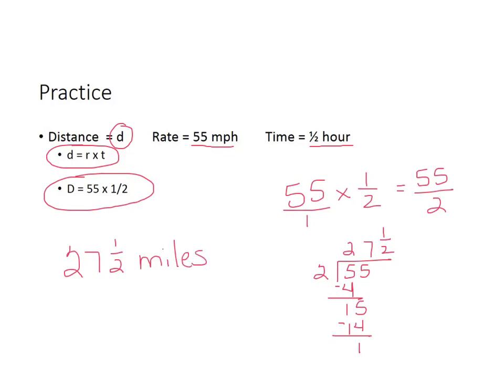So the distance is 27 and a half miles. Because the distance means we're going 55 miles per hour, but we only drove for half an hour, so we want half of that time. The final answer: the distance is 27 and one half miles.